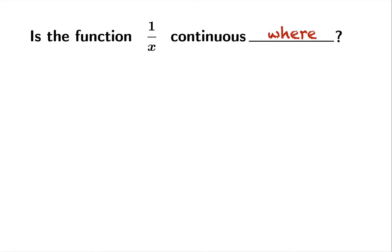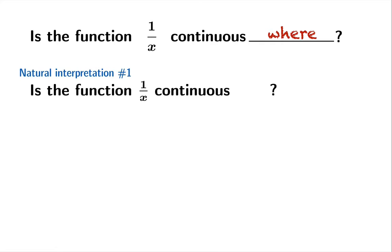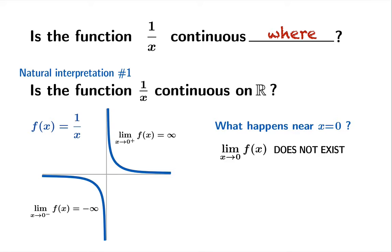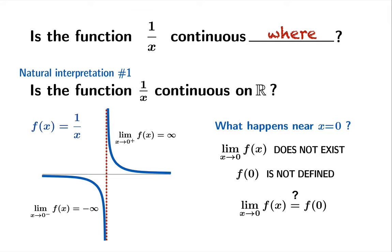Without that information you have to interpret the question somehow. One natural interpretation is: is the function 1 over x continuous on the real axis? Let's take a look at the graph of 1 over x. What happens near x equals 0? The limit from the left is negative infinity and the limit from the right is infinity. So the limit as x approaches 0 certainly fails to exist. Not only that, f of 0 is not defined. So if we look at the definition of continuity at 0, neither the limit nor the value of the function is defined at 0, so certainly the function is not continuous at x equals 0. If it's not continuous there, then it's not continuous on all of R. So the answer to this question is obviously no.